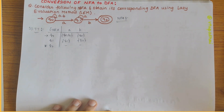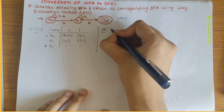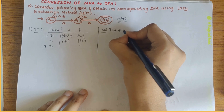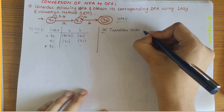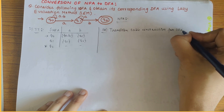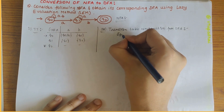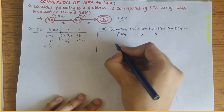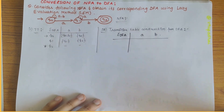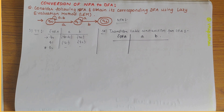Our next step is to construct the transition table of the DFA. Moving on to step 2 — transition table construction for the DFA. The peculiarity about the lazy evaluation method is that it is a much easier approach to convert NFA to DFA.